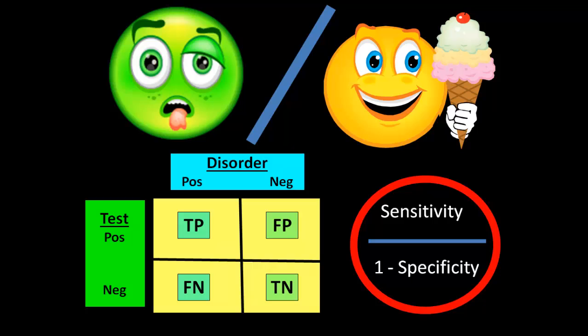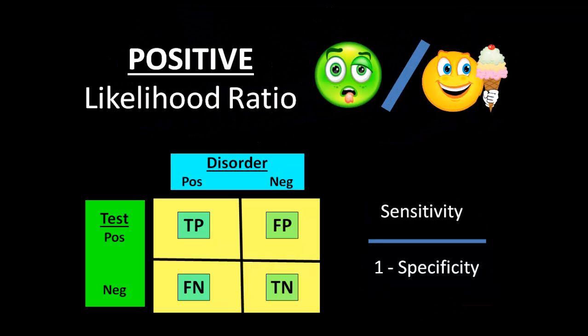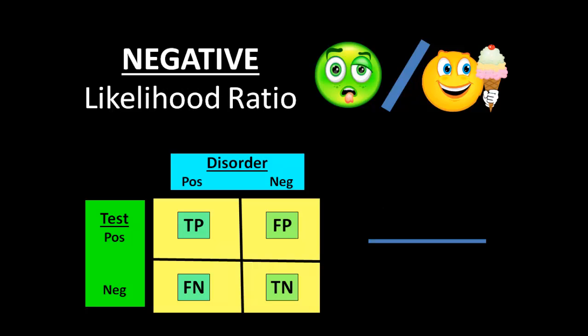One thing to point out is that both sensitivity and specificity depend only on the test and the disease severity — they don't depend on the prevalence of the disease in the population. Together, these calculate the positive likelihood ratio, which also does not depend on the prevalence of the disease. The same way we did a positive likelihood ratio, we can do a negative likelihood ratio, which ends up being 1 minus the sensitivity divided by the specificity.